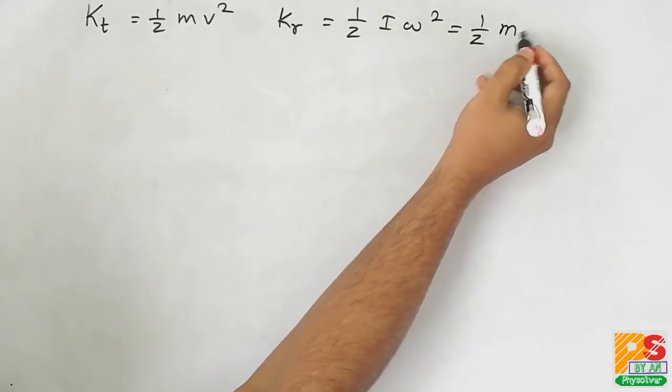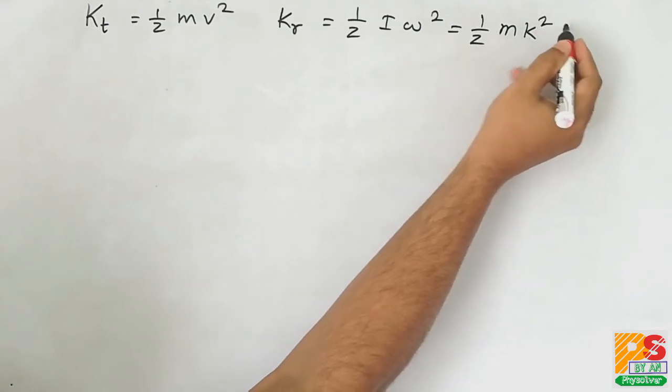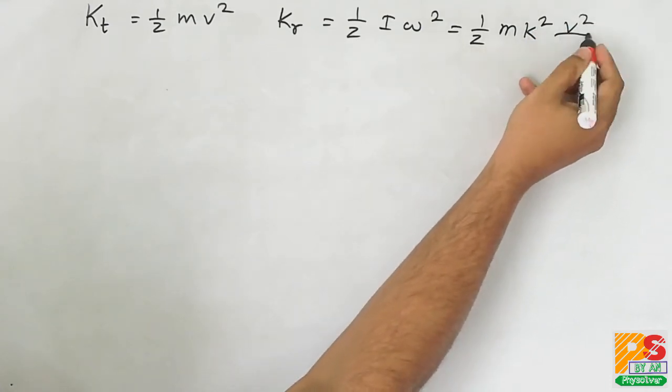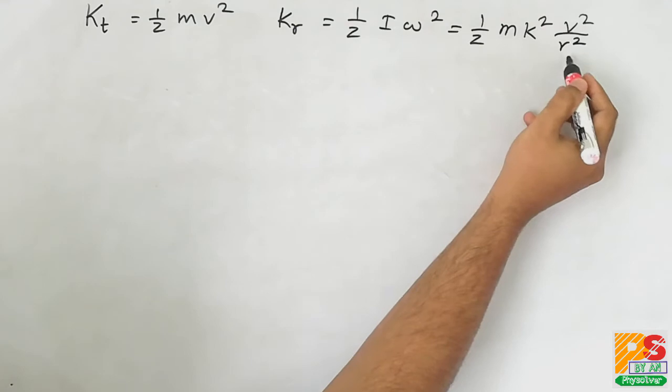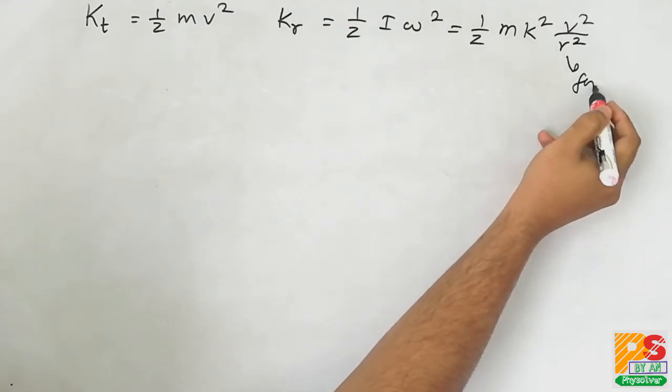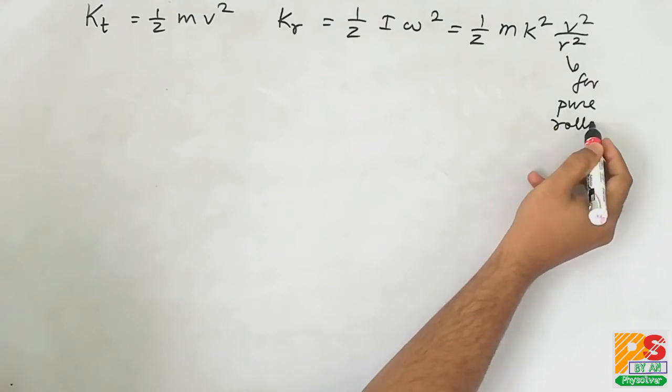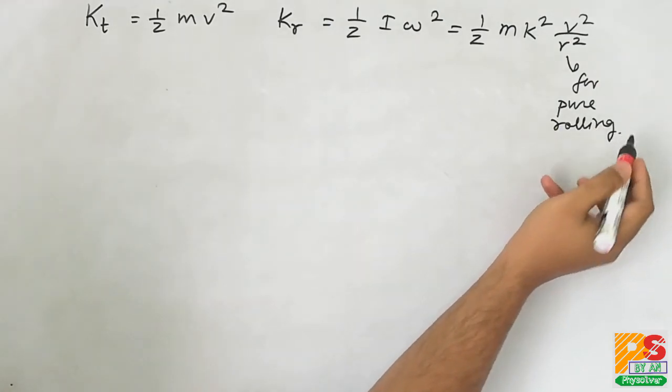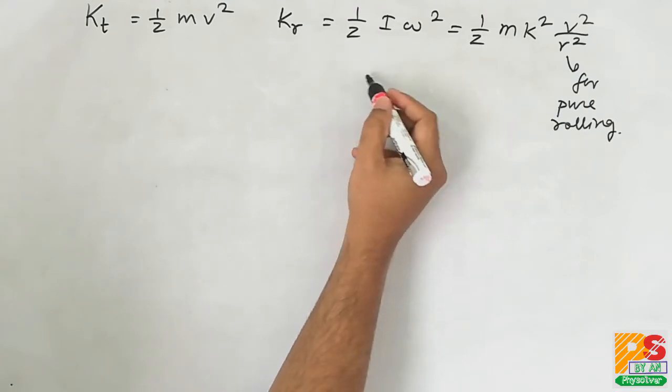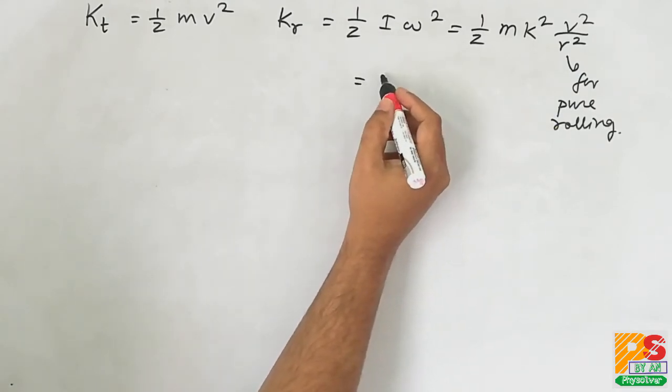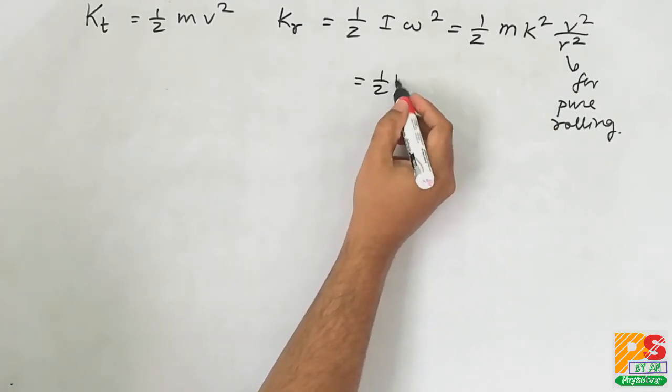Now I can be written as mk square, and for pure rolling, omega can be written as v by R. So rotational kinetic energy finally becomes half mv square into k square by R square. Mind it, k is the radius of gyration.